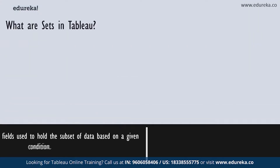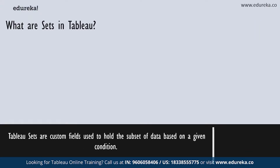So what are sets in Tableau? Tableau sets are basically custom fields used to hold a subset of data based on a given condition. You can create a set by selecting members from a list or from a visualization. You can also do so by writing custom conditions or selecting top or bottom few records in a measure. Basically, a Tableau set is a field which holds certain parts of your data to which you can apply a certain condition.